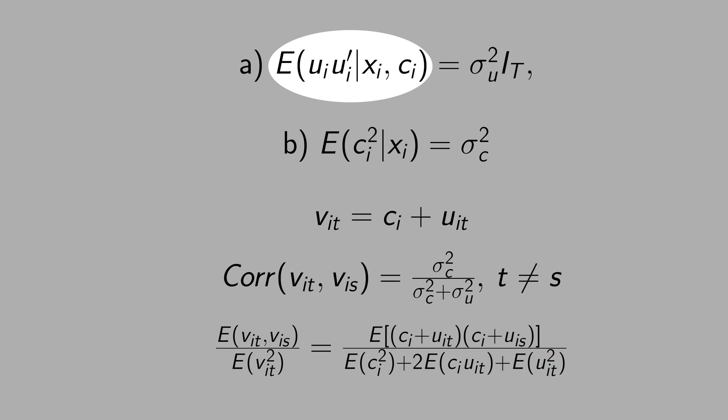First, let's calculate the variance of U conditional to X and C. We get sigma square U times the identity matrix. Therefore, we are assuming here homoskedasticity. In a similar way, we write the variance of C conditional X as sigma square C.